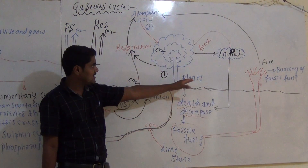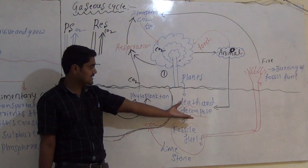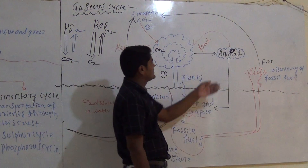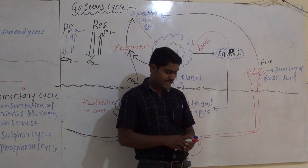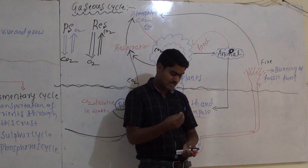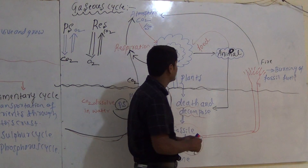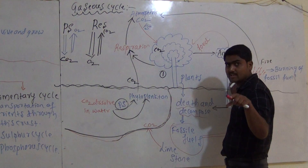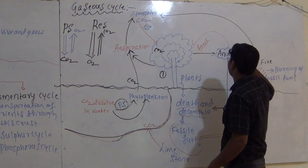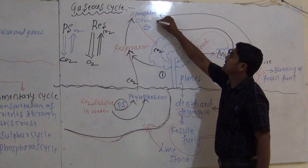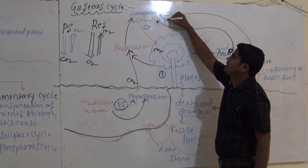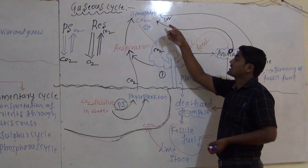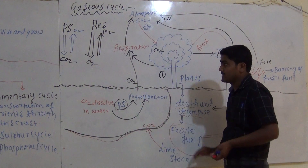The plants are also consumed by animals, and they undergo respiration. The carbon dioxide is again released into the atmosphere. The consumer undergoes respiration, and the carbon dioxide reaches the atmosphere.